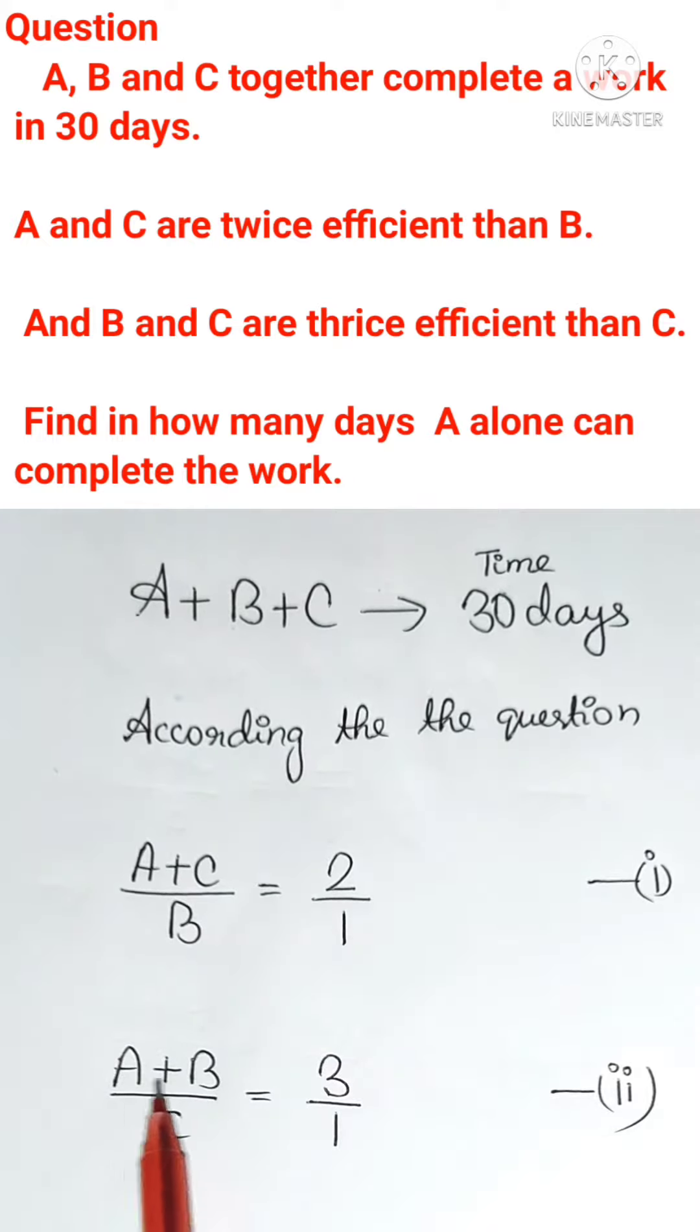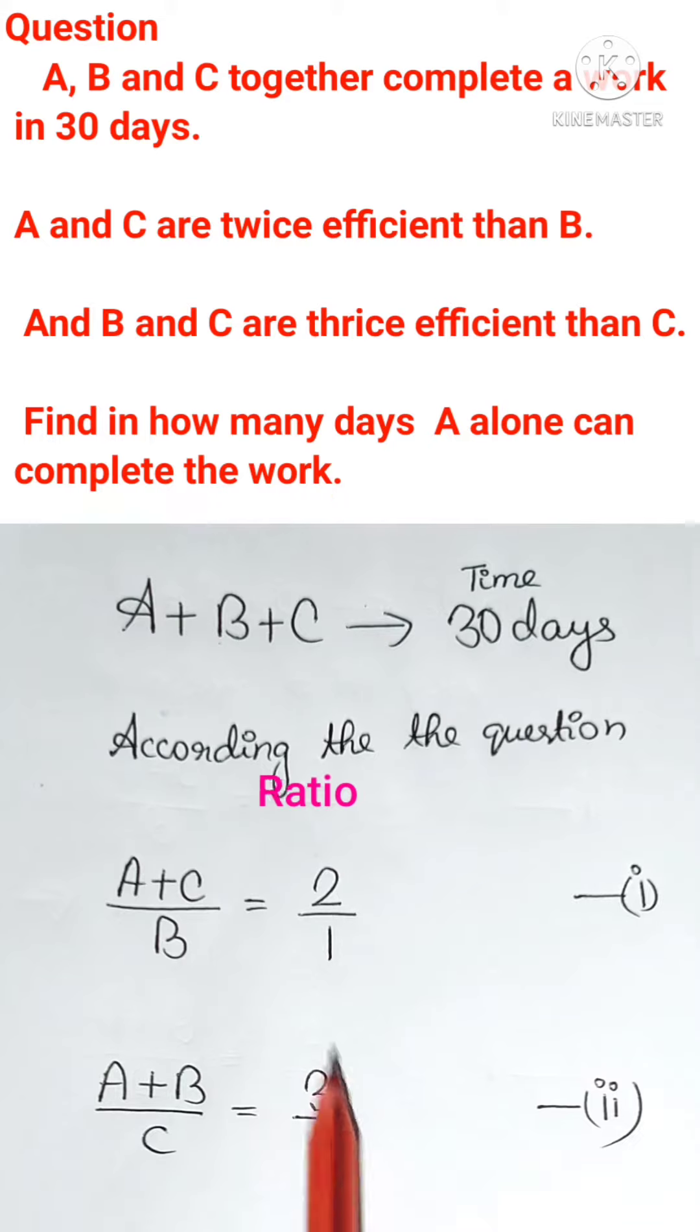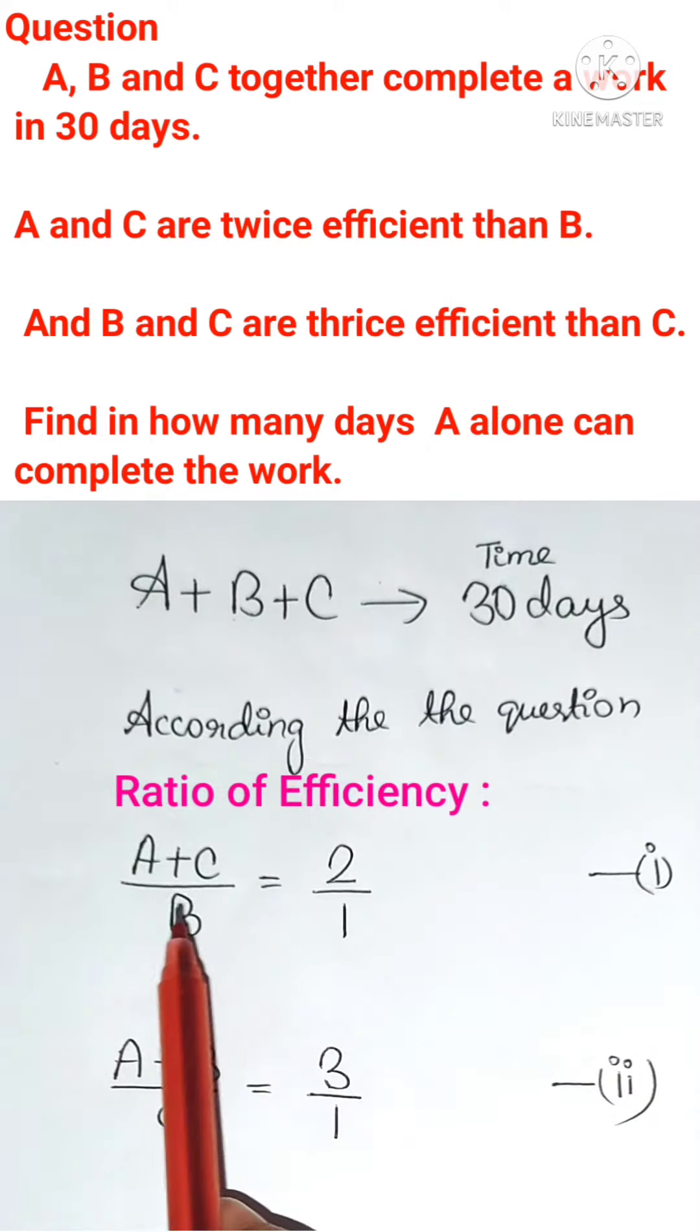Similarly here we are said that A and B together can do twice the work as C. So these are the ratio of the efficiency. And now as you can see on the left hand side we have A, B, C here also A, B, C.